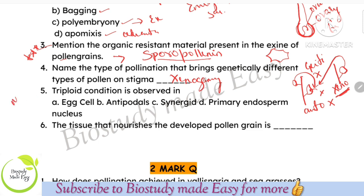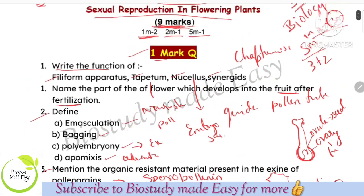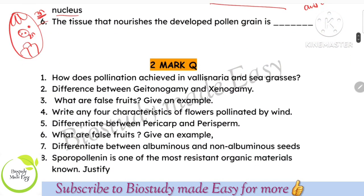Triploid condition is observed — this is from a model question paper. The triploid condition is found in the embryo. You should know the embryo sac diagram: Antipodals, Synergids, egg cell, polar nuclei — these are diploid. When one male gamete fuses with the polar nuclei, it becomes triploid — that is the primary endosperm nucleus. Next, the tissue that nourishes the developing pollen grain is Tapetum.